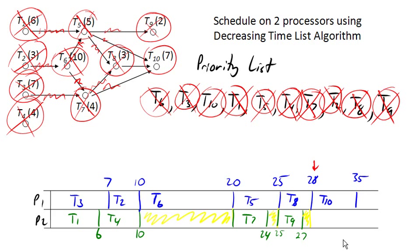Notice that processor two is also going to be idle during all of that time, so we have a fair amount of idle time in this schedule. Largely because of this big block where we were waiting for task six to get done before we could get on to the rest of these.